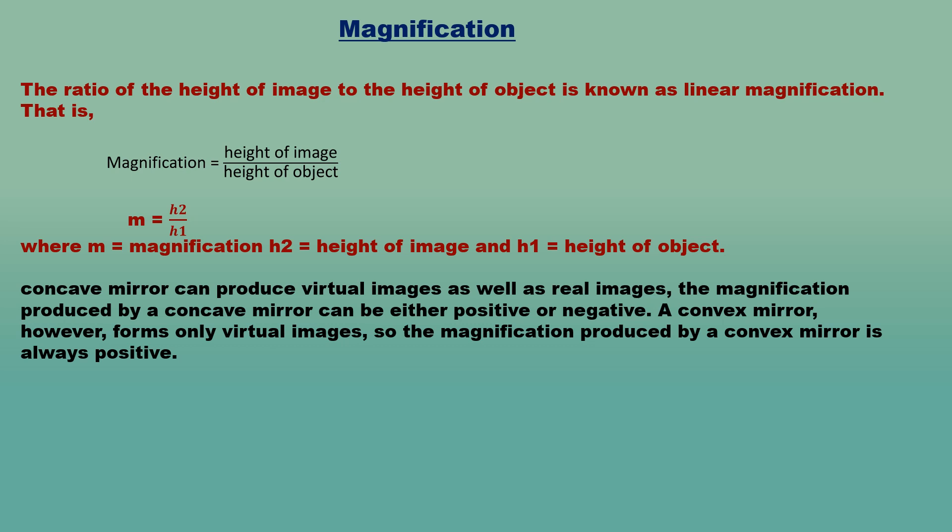A virtual image is always formed above the principal axis, so its height H₂ is positive. A real image is formed below the principal axis, so its height H₂ is negative. Therefore, though the height of object H₁ is always positive, the height H₂ of the image can be either positive or negative. Since a concave mirror can produce both virtual and real images, the magnification produced by a concave mirror can be either positive or negative. A convex mirror forms only virtual images, so the magnification produced by a convex mirror is always positive.